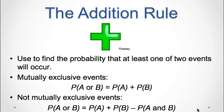In other words, the addition rule for mutually exclusive events states that if you have two events with no common outcomes, the probability that one or the other occurs is the sum of their probabilities. This rule can be extended to more than two mutually exclusive events: if events A, B, C, and so on each have no outcomes in common, then P(A or B or C or ...) = P(A) + P(B) + P(C) + ...